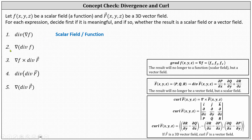Number two: we begin with the divergence of the function f. We don't determine the divergence of a scalar function f — we determine the divergence of a vector field F. Number two is not meaningful.